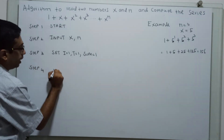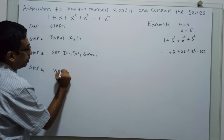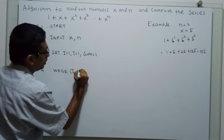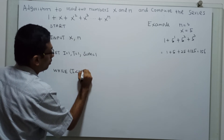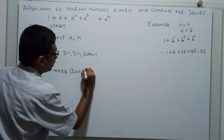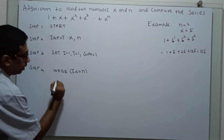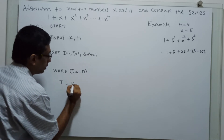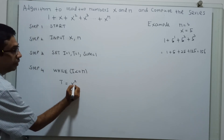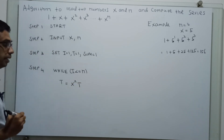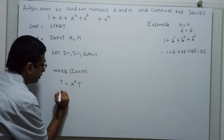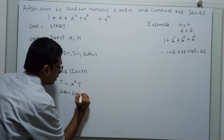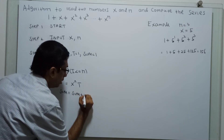Step 4: We have a while loop — while i less than or equal to n. Inside the loop, compute t equal to x to the power t. Then sum equal to sum plus t.